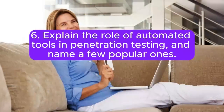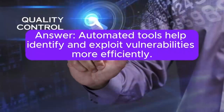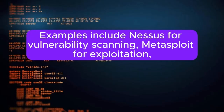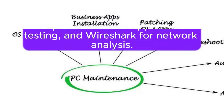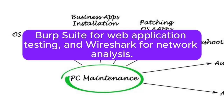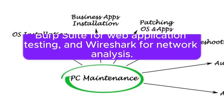Question 6: Explain the role of automated tools in penetration testing, and name a few popular ones. Answer: Automated tools help identify and exploit vulnerabilities more efficiently. Examples include Nessus for vulnerability scanning, Metasploit for exploitation, Burp Suite for web application testing, and Wireshark for network analysis.